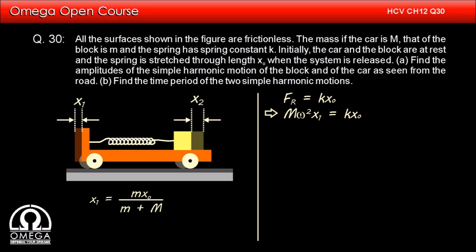Using the similar logic as the last part of the question, we can conclude that the displacement in the car from its equilibrium position is small m into X knot divided by small m plus capital M, which implies X knot is equal to small m plus capital M into X1 by small m.